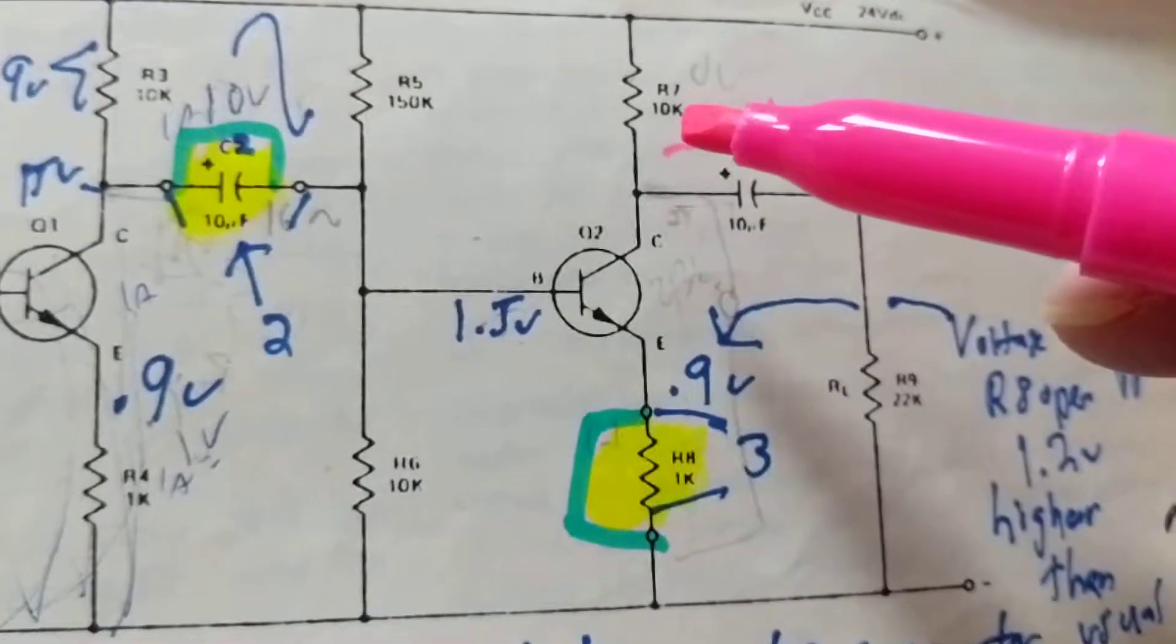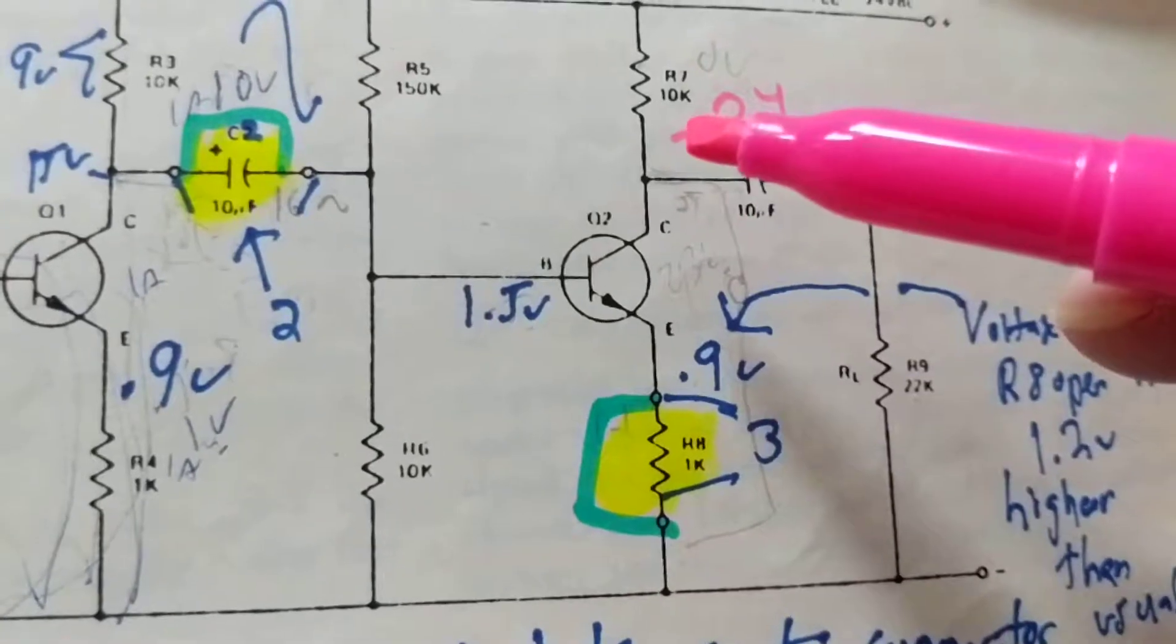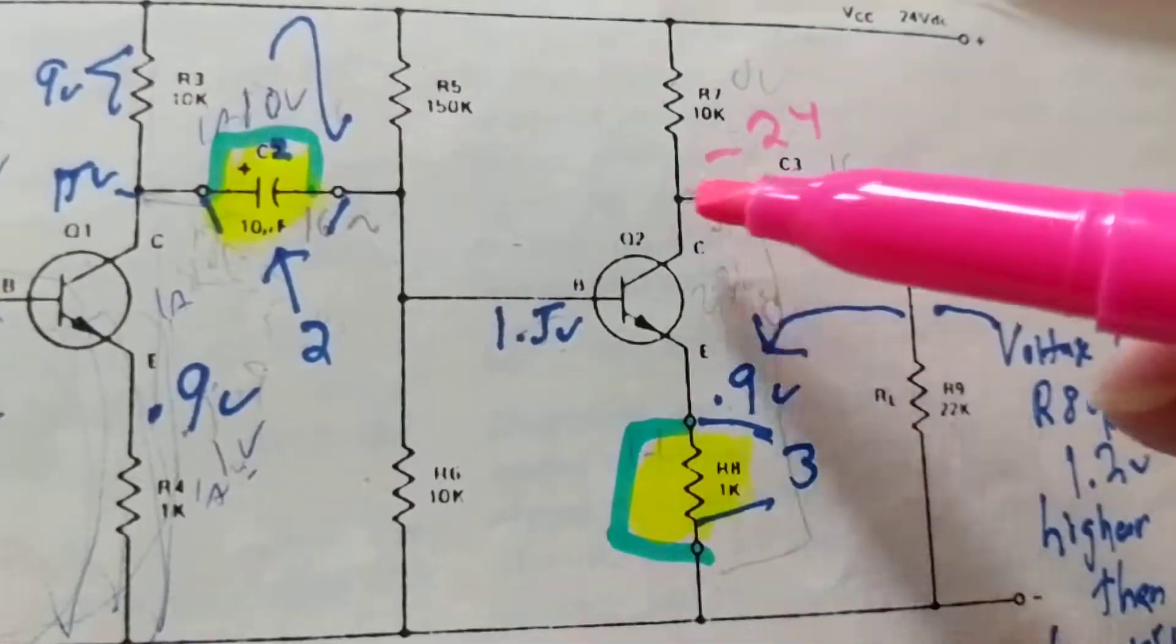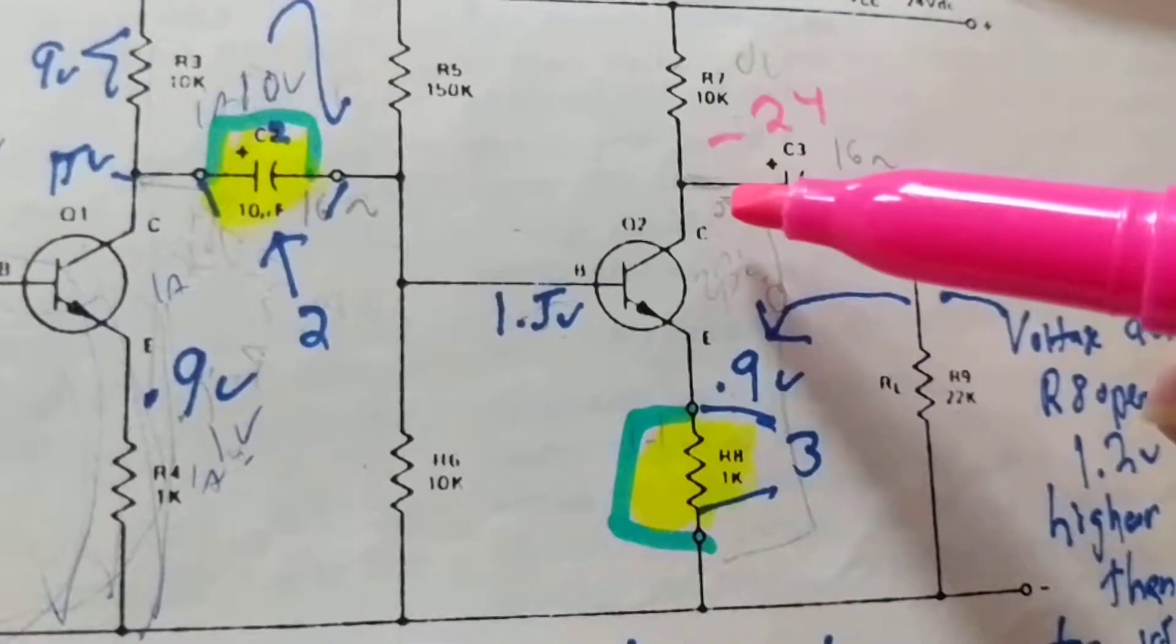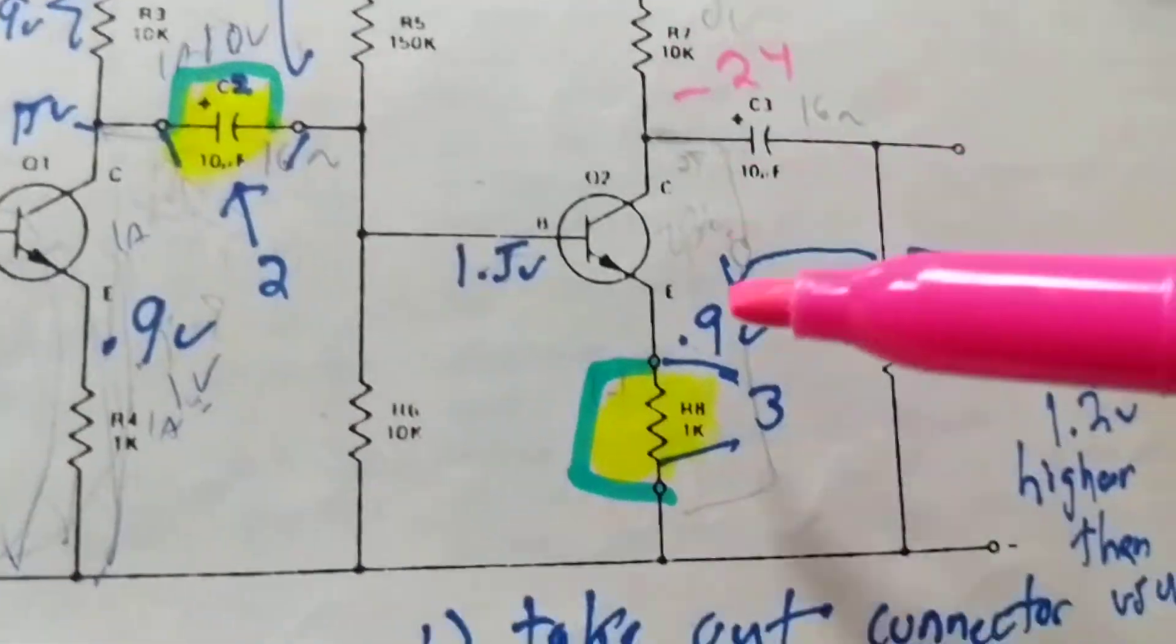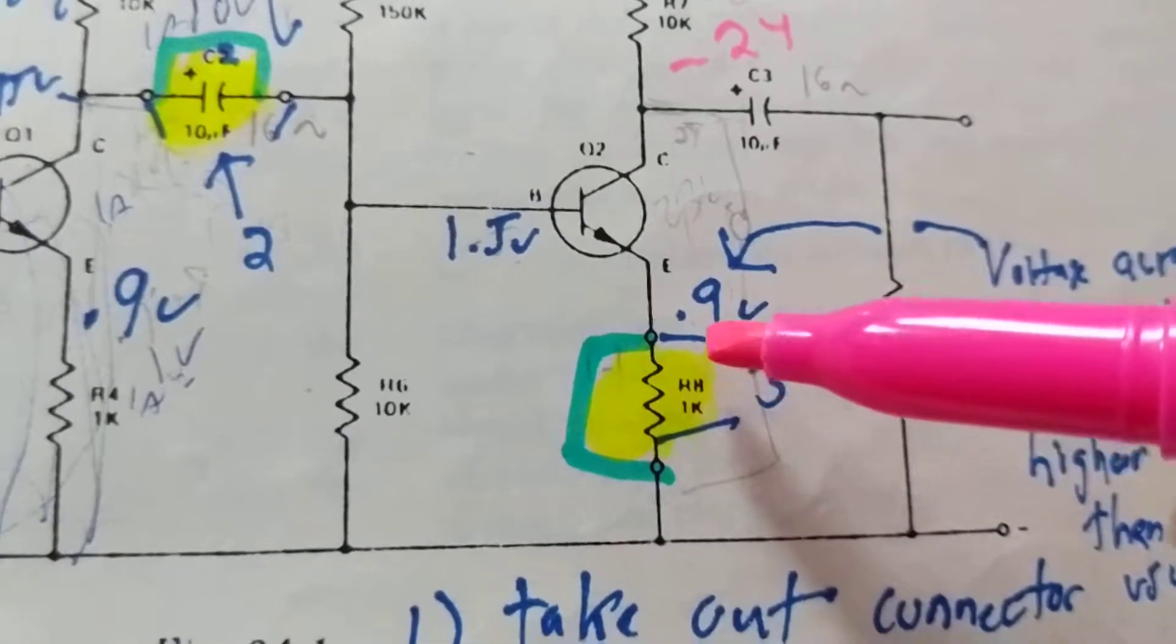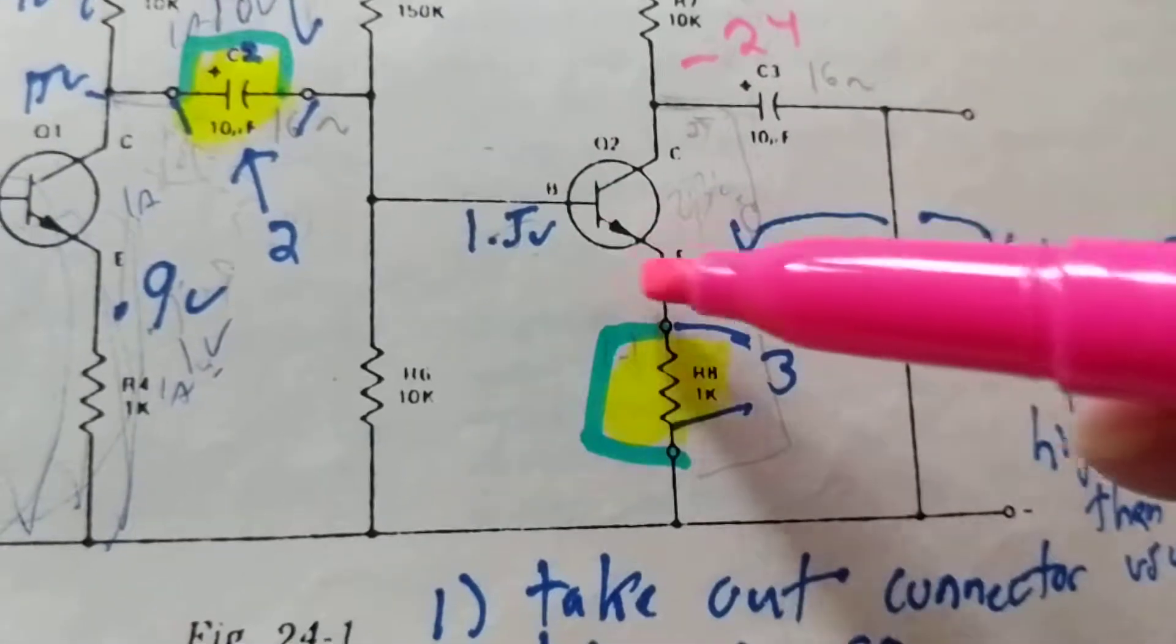Usually resistors, when they go bad, they increase in value. They go high. They open. They don't short. If this would increase in value, and if this would be the problem, we wouldn't measure 24 volts over here. We would measure less. We would measure 0 volts. And we're not. We're measuring 24 volts. That tells me probably this resistor is good. Now comes the interesting part. 1.5 volts here. 1.2 volts over here. So maybe the base emitter junction is not good. Possible.